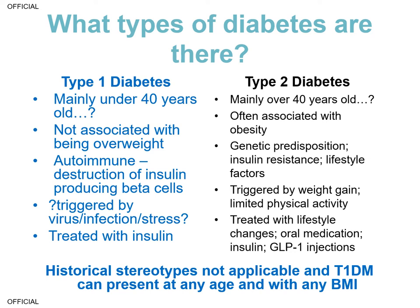It's important to know that historical stereotypes aren't really applicable to type 1 diabetes — it can present at any age and with any BMI. So although weight and age may help try to identify the type of diabetes, type 1 diabetes may present in an older population and indeed in individuals who are overweight or obese.